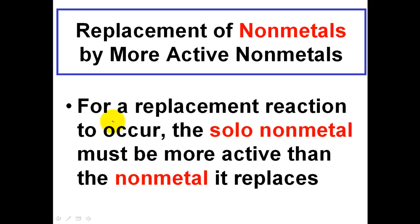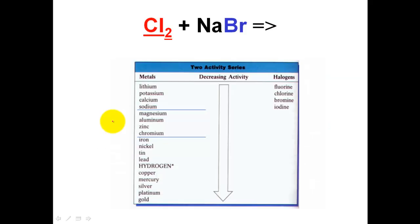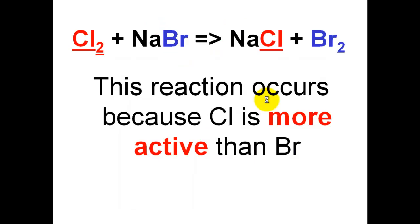The same rules apply for non-metals. For a replacement reaction to occur, the solo non-metal — the one that is alone — must be more active than the non-metal it is attempting to replace. Here's our example: chlorine is going to attempt a replacement. It can only replace a non-metal, so it's going to target bromine. Chlorine is the element alone and is more active than bromine, the element in the compound. Therefore, this reaction will occur, producing NaCl and bromine.